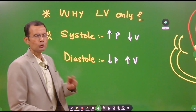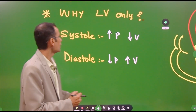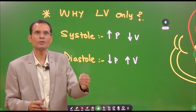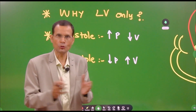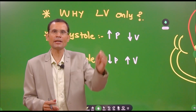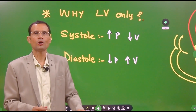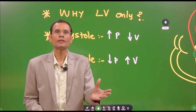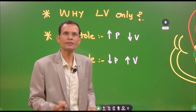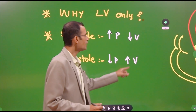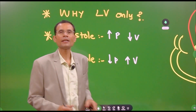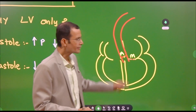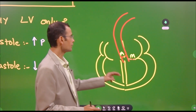Before we start with the graph, two basic aspects. One: systole and diastole happen alternately in the left ventricle. Systole means the pressure inside the ventricle increases — the chamber is contracting, so pressure rises — and then blood is ejected out, so the volume will fall. Then diastole happens: the ventricle relaxes, expands, and accommodates blood, so pressure inside will fall and volume will increase.